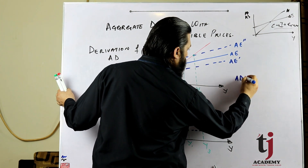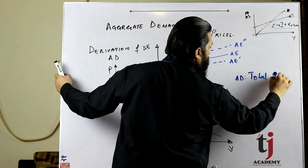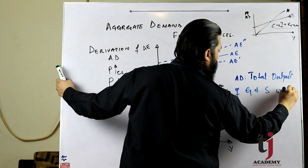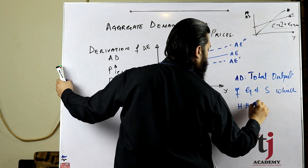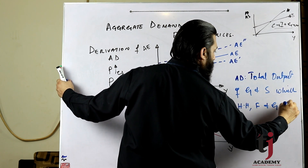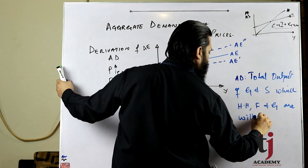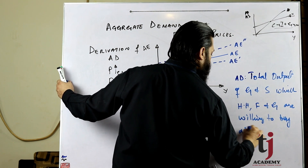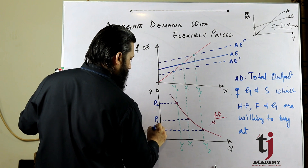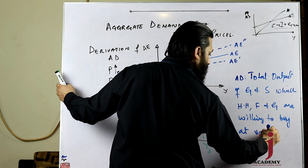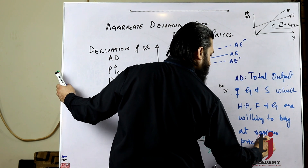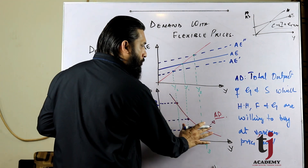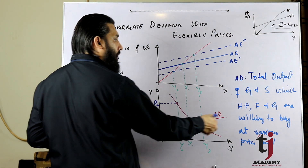Aggregate demand shows total output of goods and services which households, firms, and government are willing to buy at various price levels. Aggregate demand kya hoti hai - woh total output ki demand jo willingness to buy dikhati hai at various price levels.